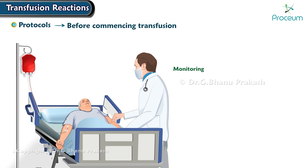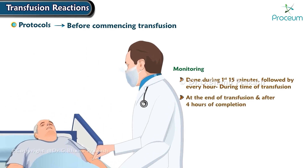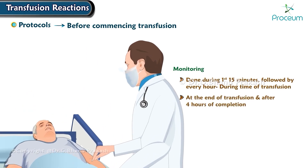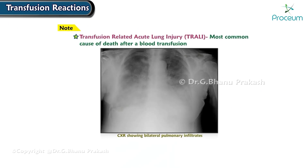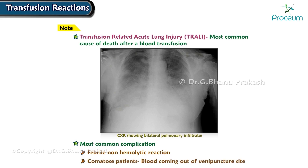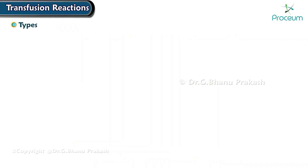Monitoring of patients must be done during the first 15 minutes, followed by every hour during the time of transfusion, at the end of transfusion, and after four hours of completion. Transfusion-related acute lung injury is the most common cause of death after a blood transfusion. The most common complication of blood transfusion is febrile non-hemolytic reaction. The most common complication in comatose patients is blood coming out of the venipuncture site.